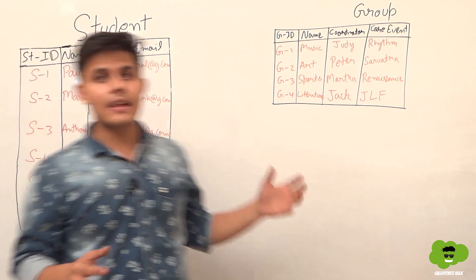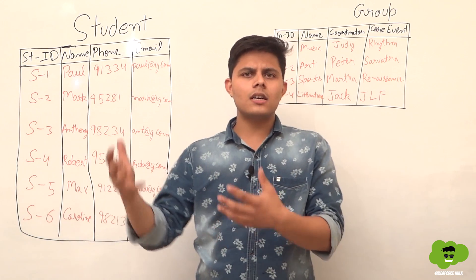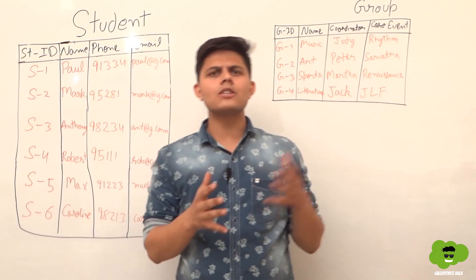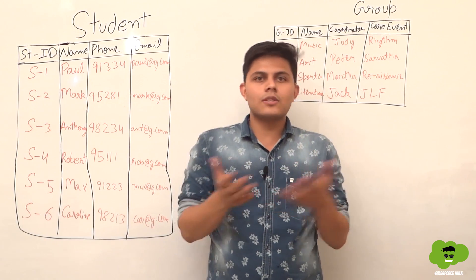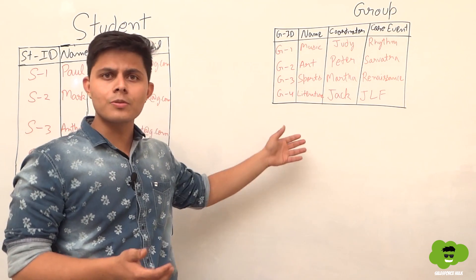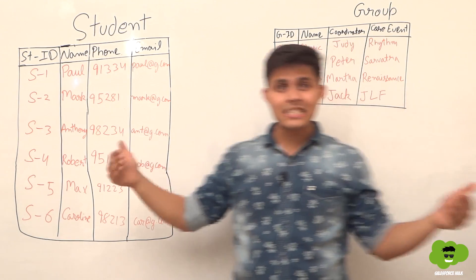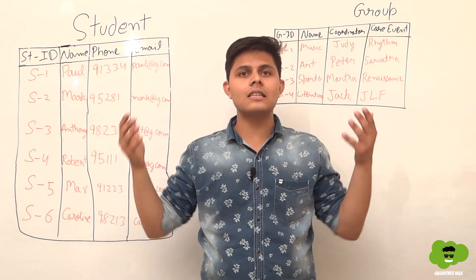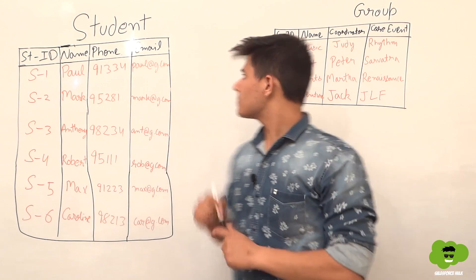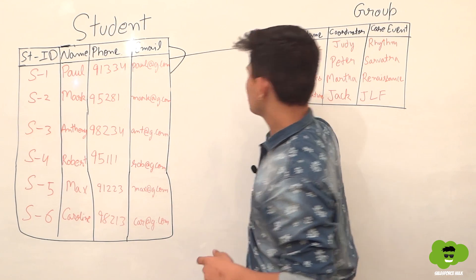I have taken an example of student and group. Whenever a student gets enrolled into a particular college or school, there are different groups in which they can get enrolled. A single student can get enrolled into different groups, and in a single group we can have different students as well. This is basically a many-to-many relationship.